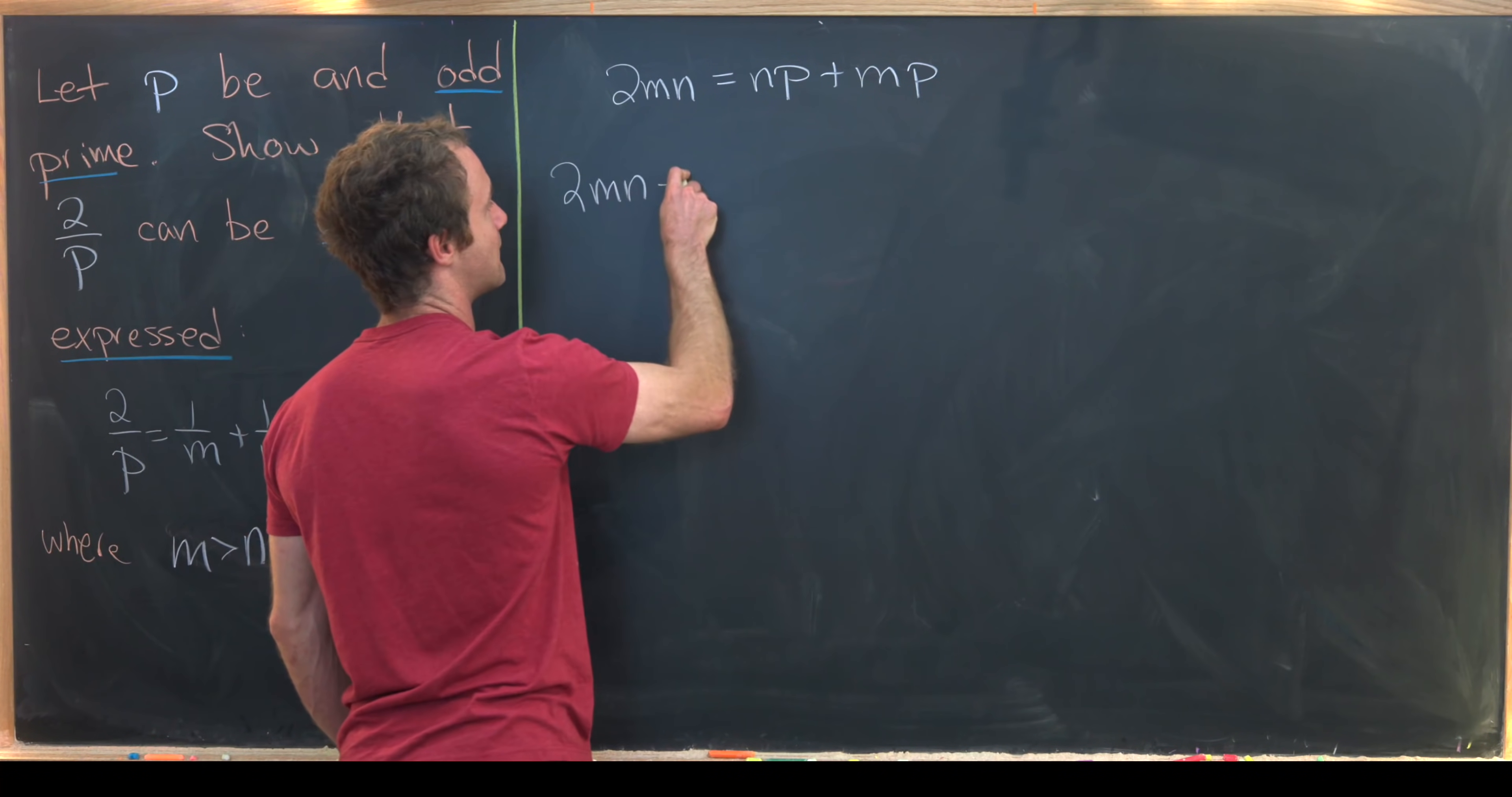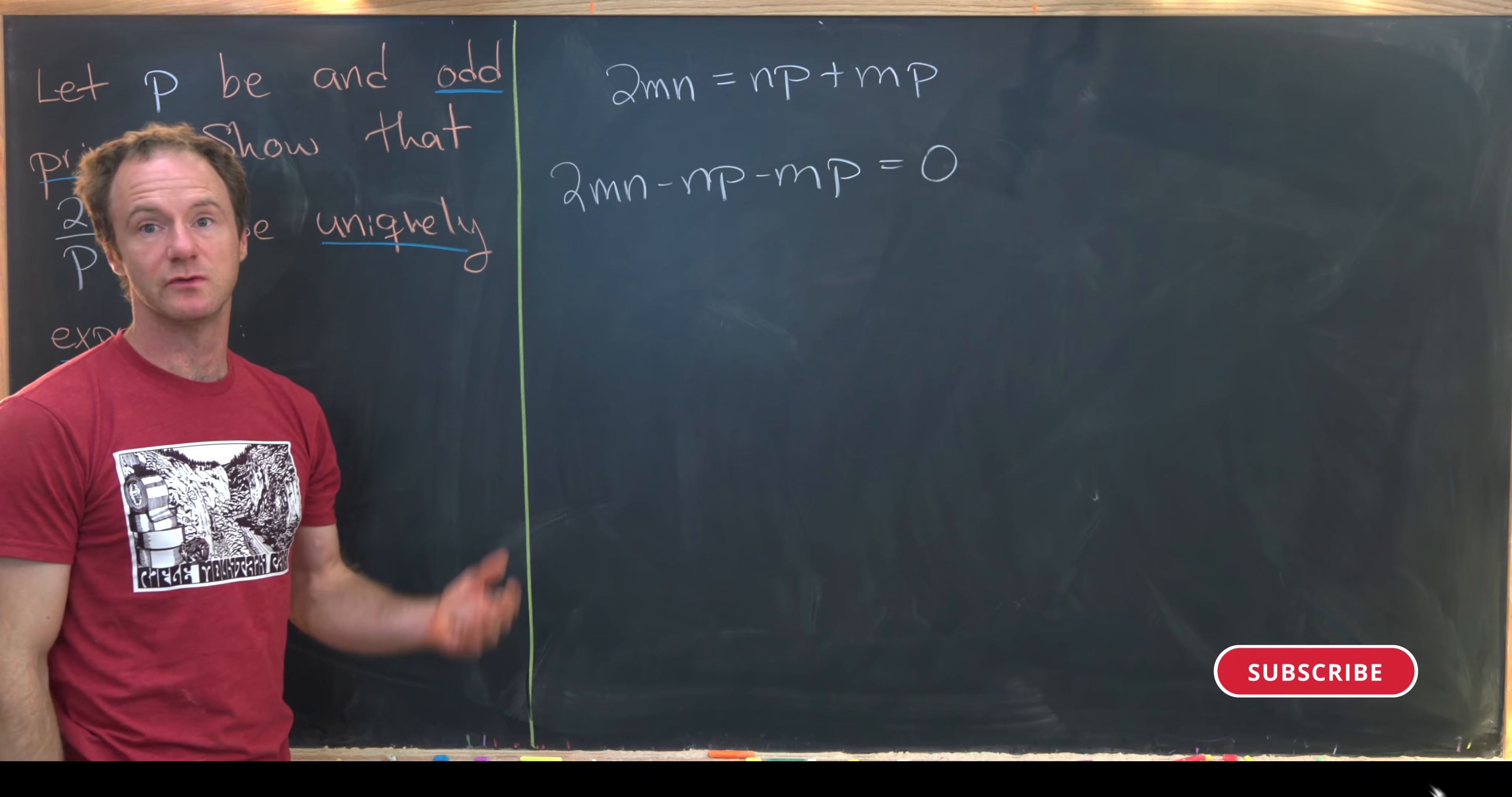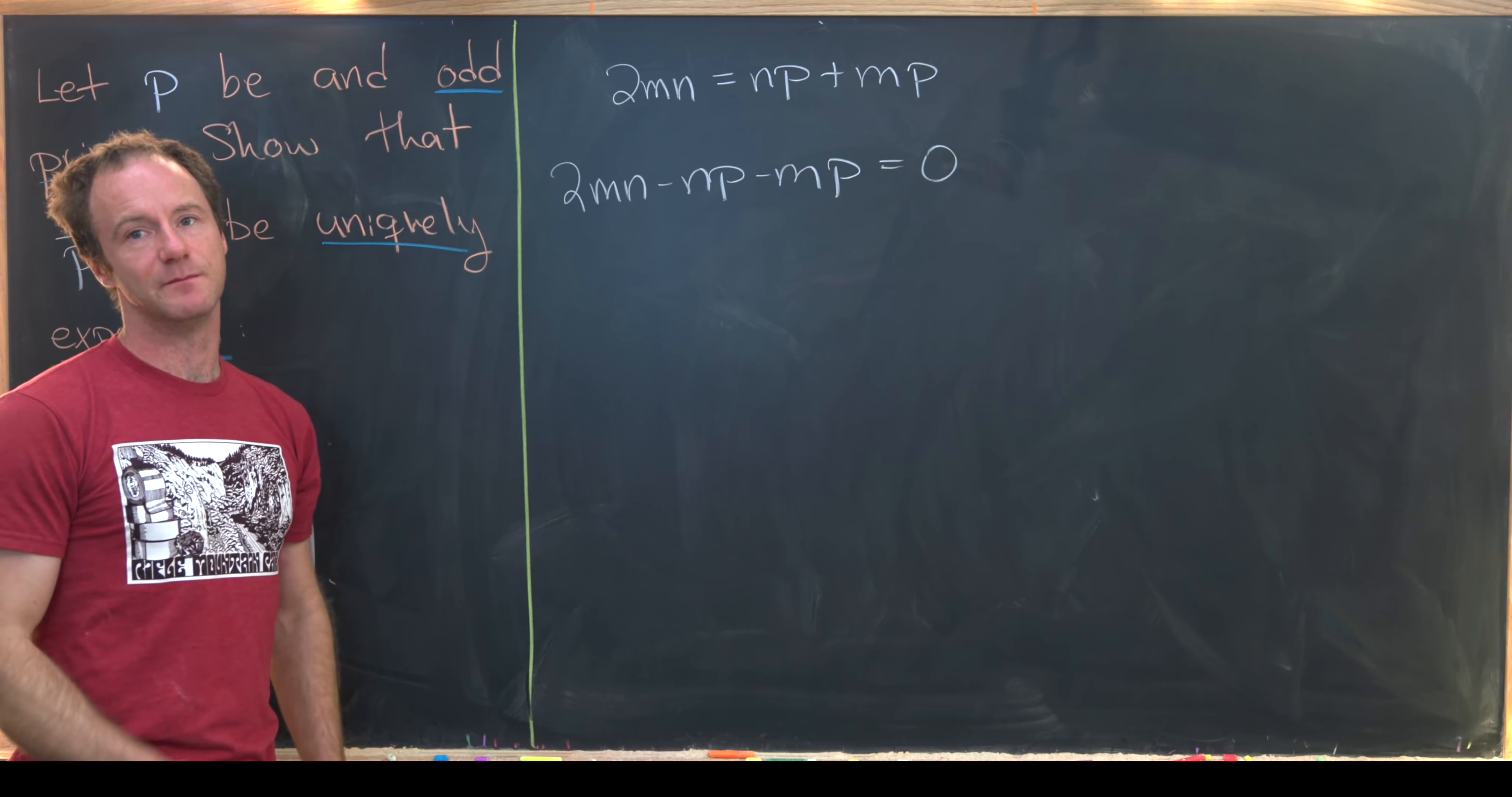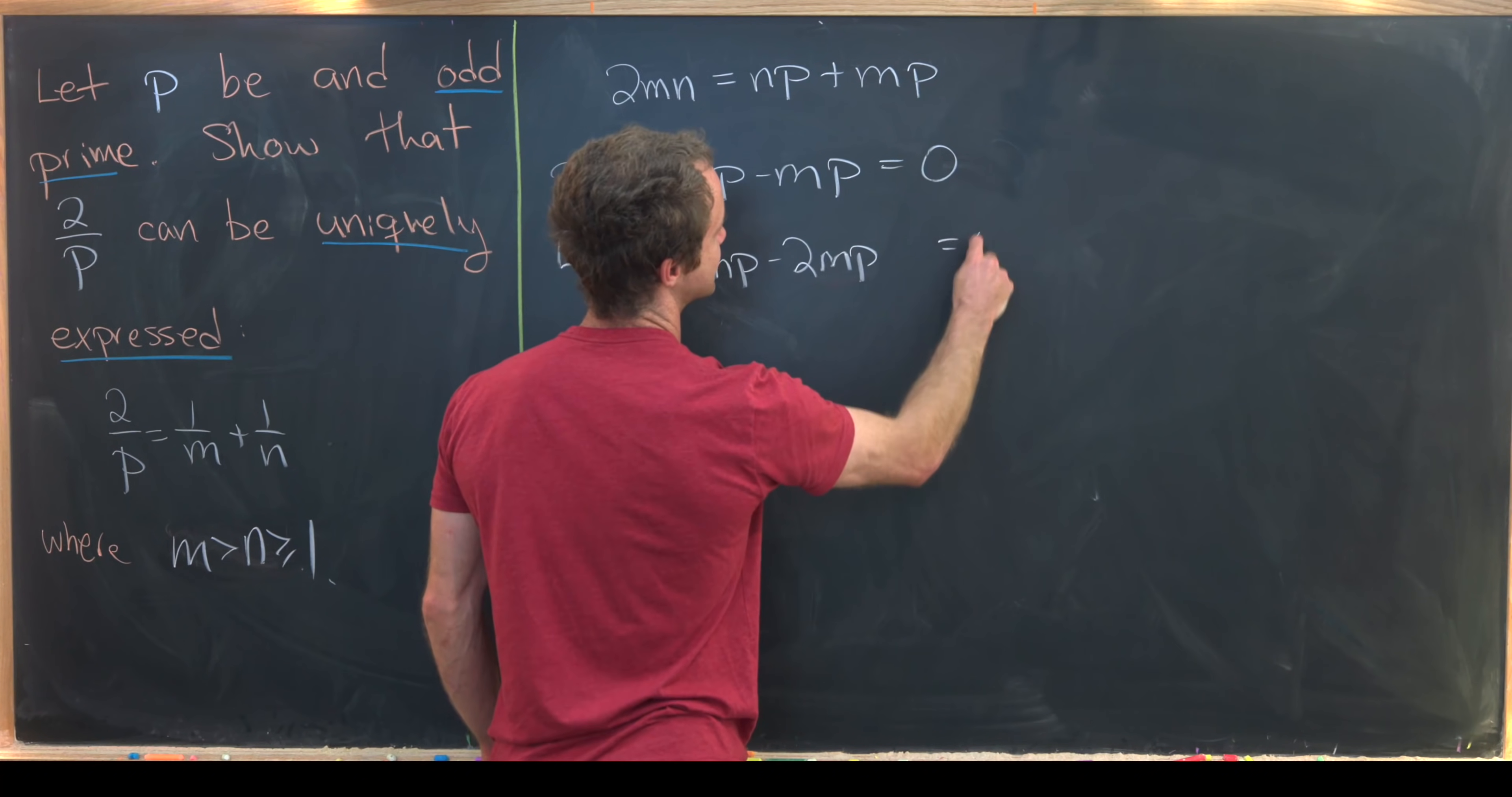From here I'll multiply this by the number 2 and I'll do that because it's easier to work with 2 times 2 equals 4 than 2 times 1 equals 2. That's going to build some symmetry into this problem. So multiplying by 2 gives us 4MN minus 2NP minus 2MP equals 0.